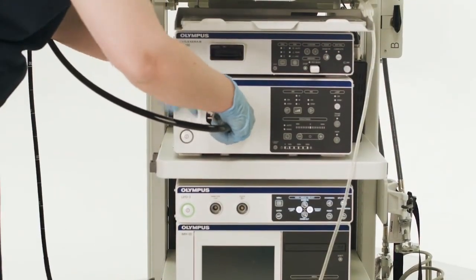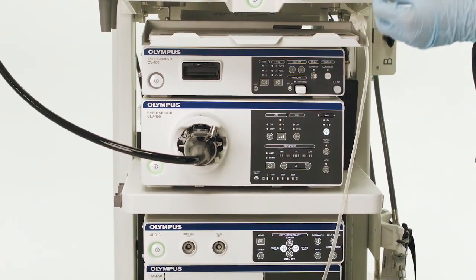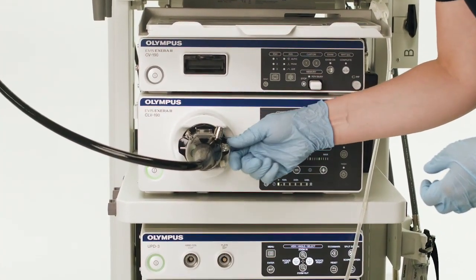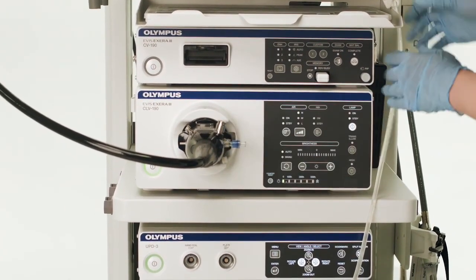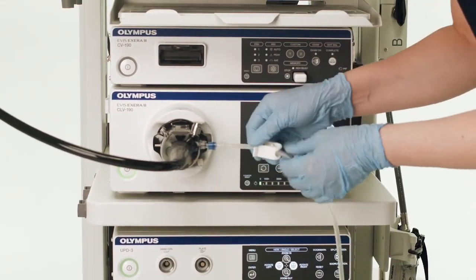For your next case, attach a new MAJ 1652 auxiliary channel adapter to your next endoscope as instructed previously. Then attach the scope via the fresh adapter to the MAJ 1651 tube set. Remember to disengage the pinch clamp and prime before use.